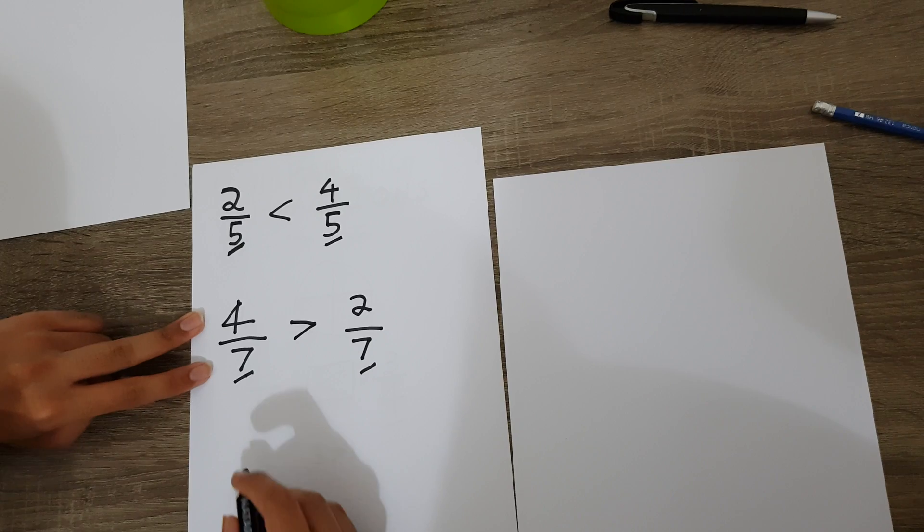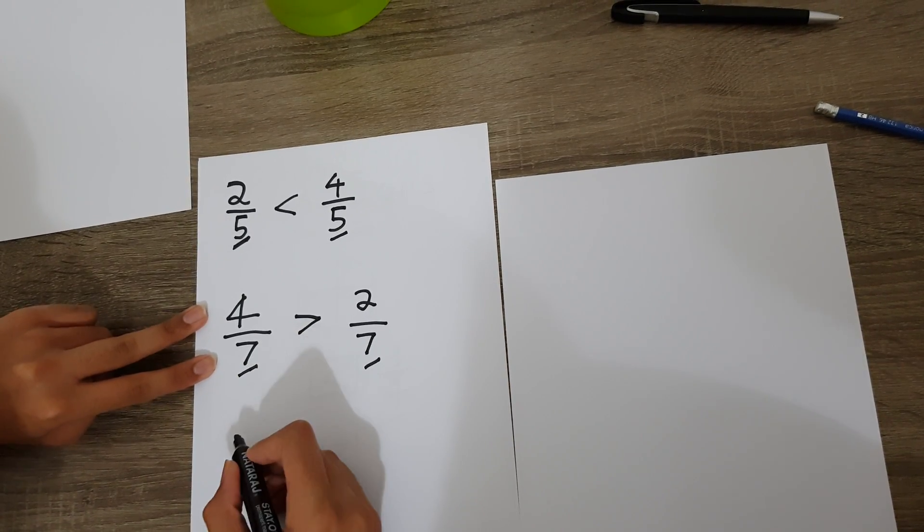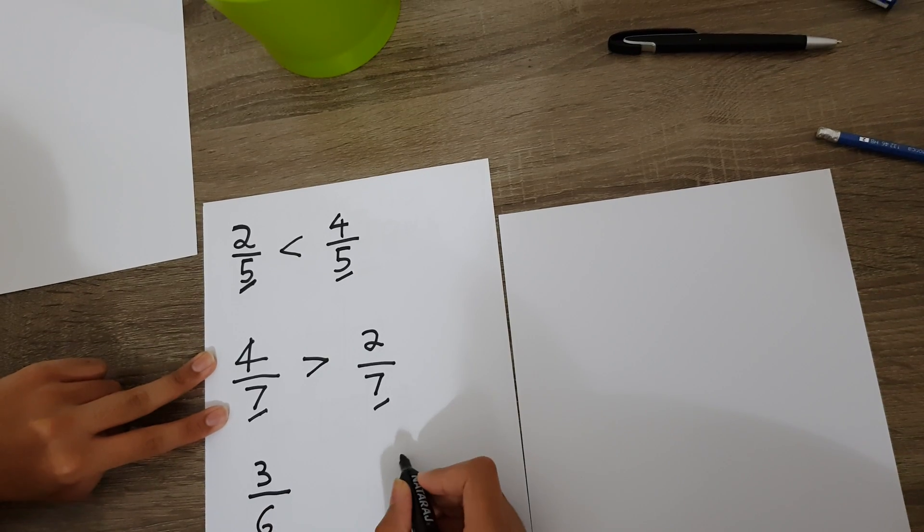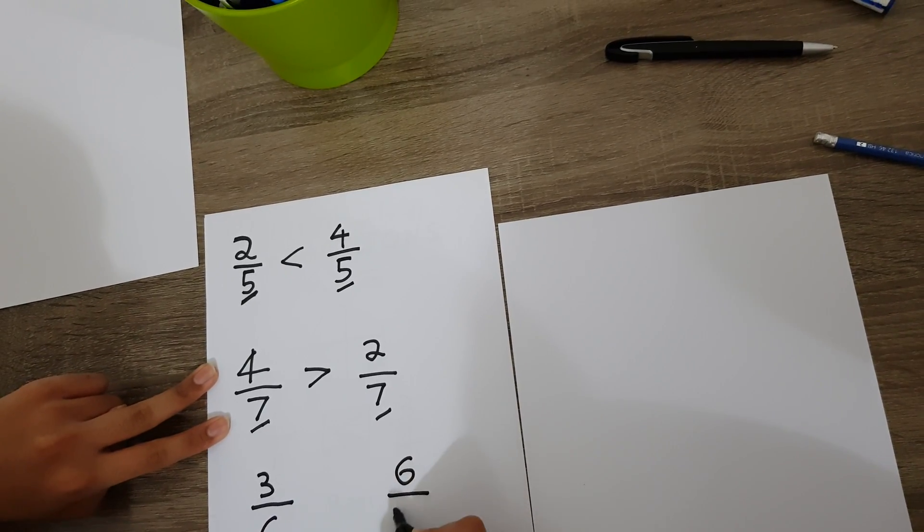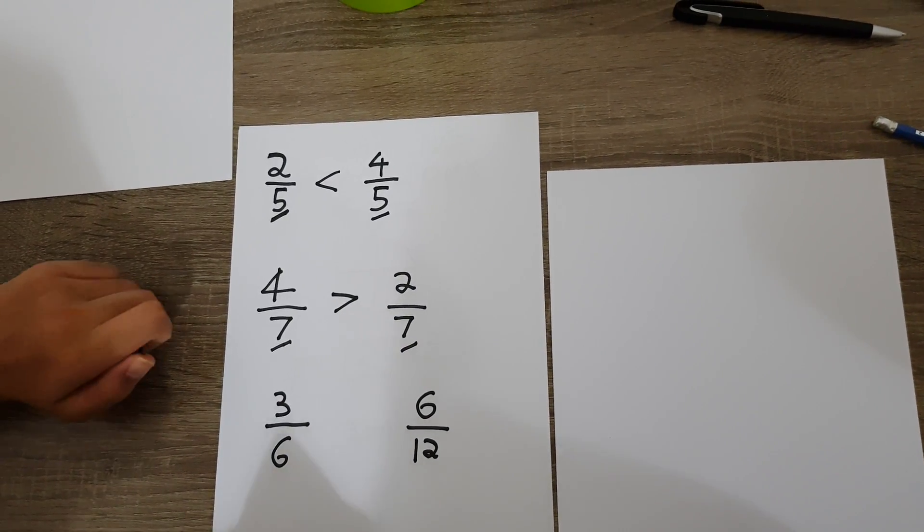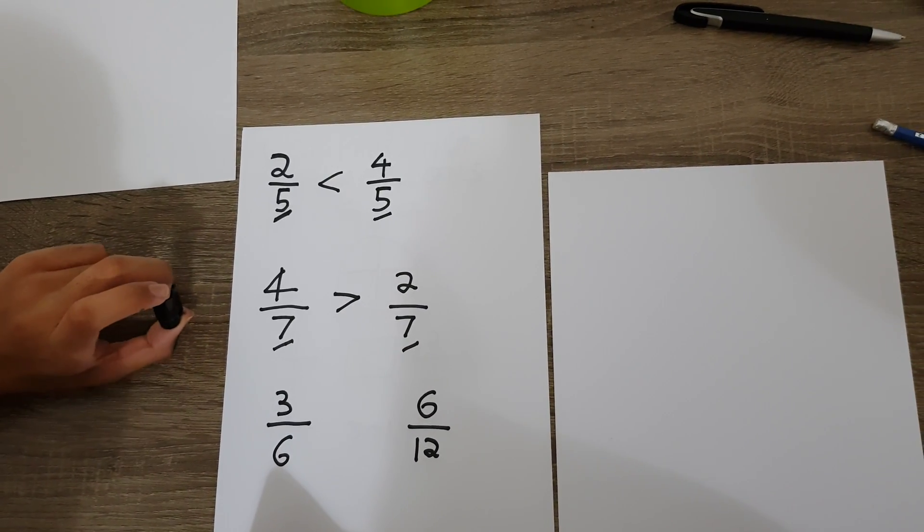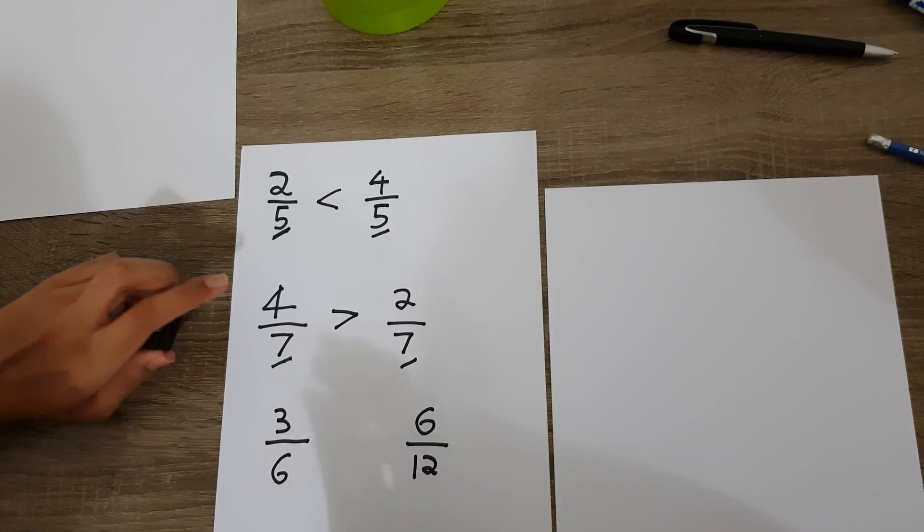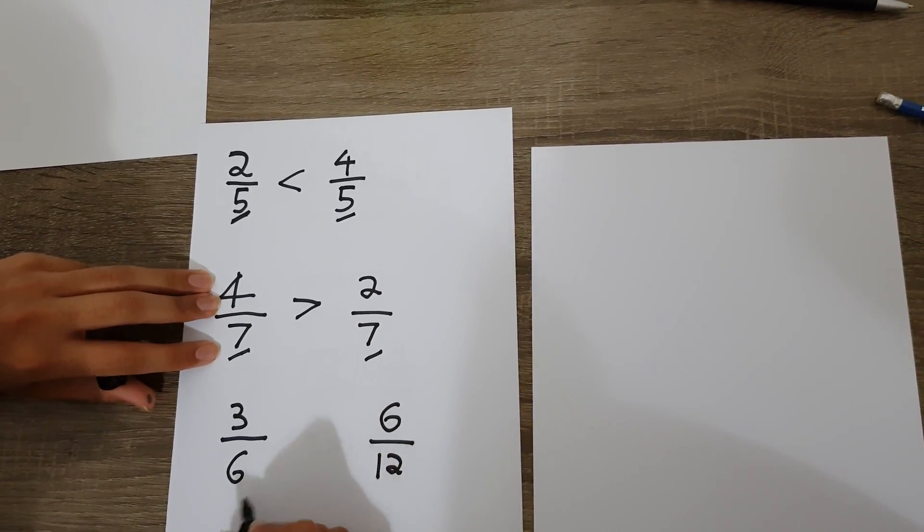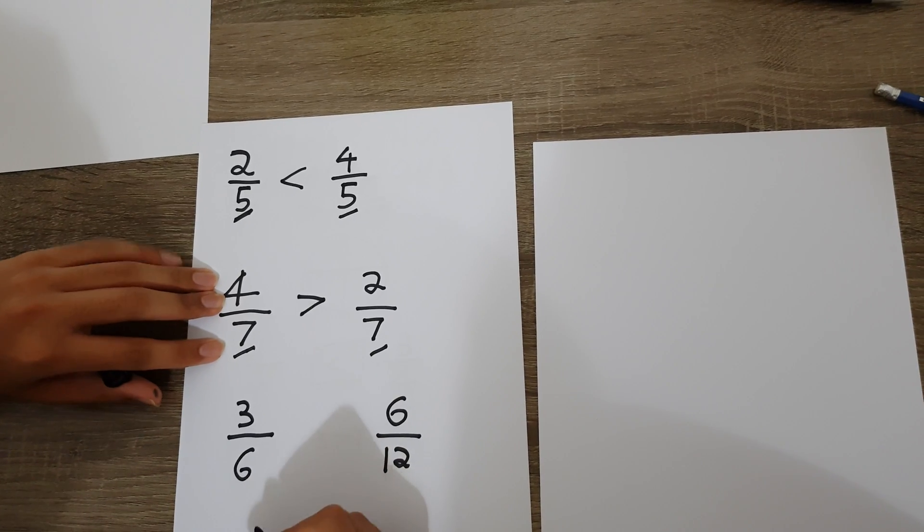Now let's do another problem: three over six and six over twelve. Which fraction is bigger? I recommend you pause the video and try it out yourself. Now let's see. First we check if the denominator is the same. In this case, the denominator is not the same.